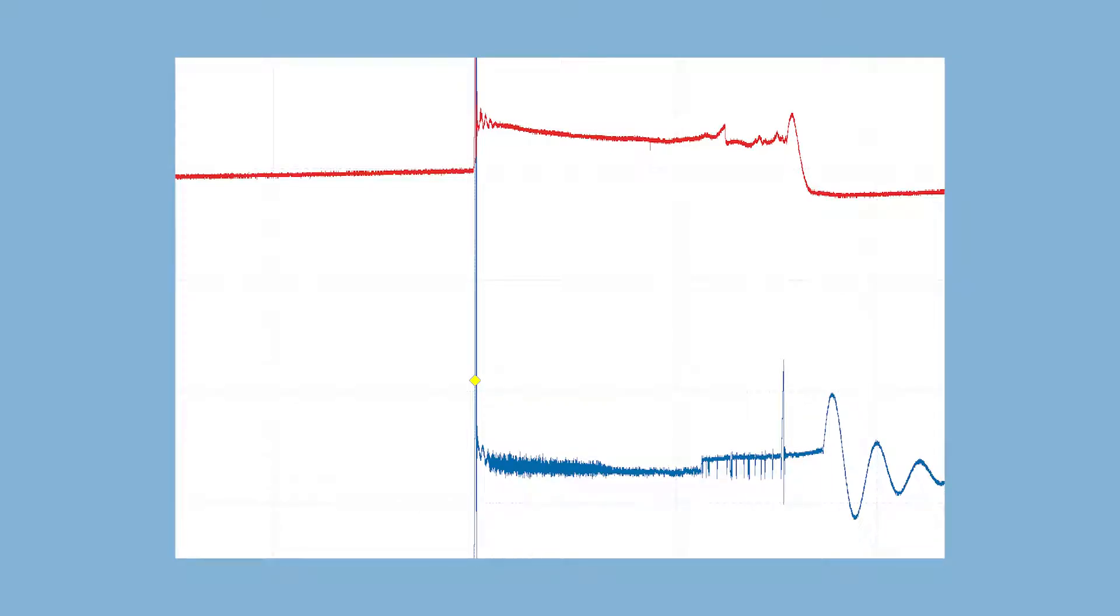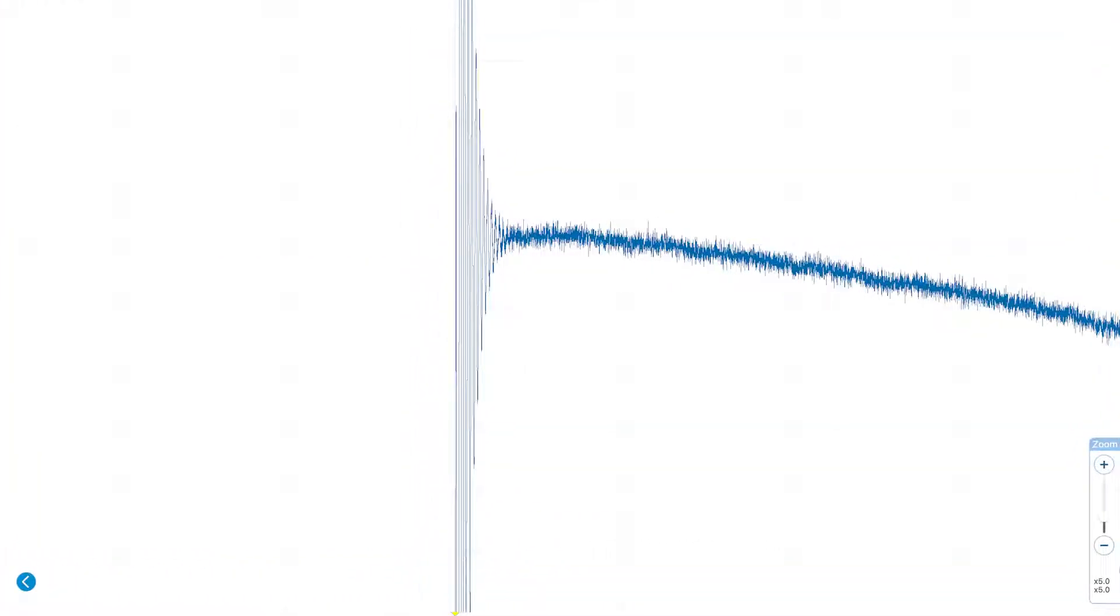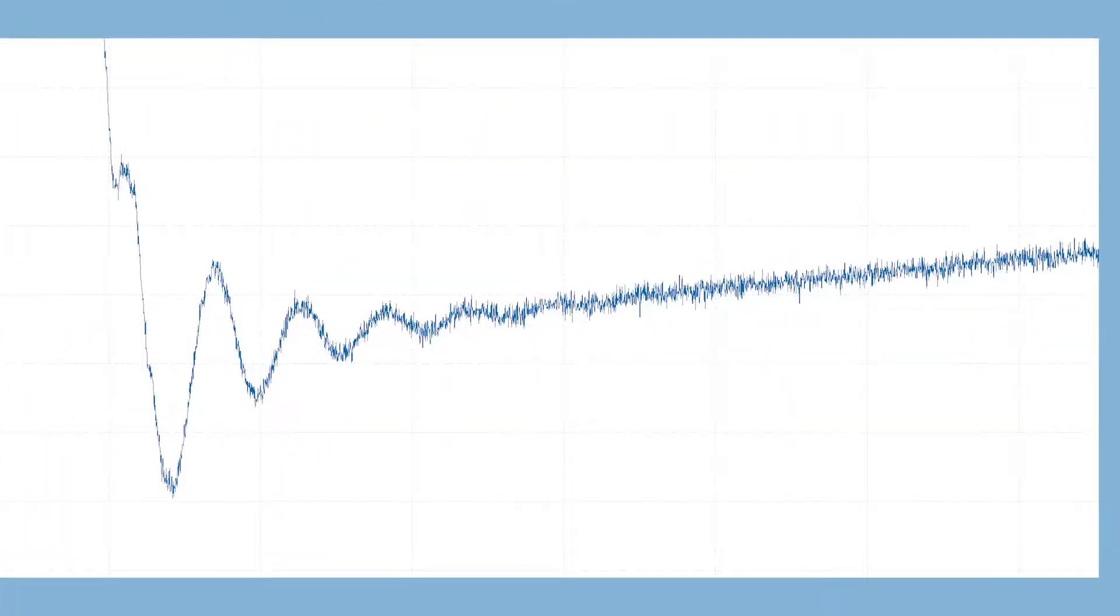The perfect burn line should be a constant decreasing slope at idle. The line can have small changes and can appear jagged on some scopes. This has been theorized as changes in the gases and turbulence inside the cylinder. At the end of the burn line is the coil oscillations. This is the energy left over in the coil. It should have three or four smooth humps.